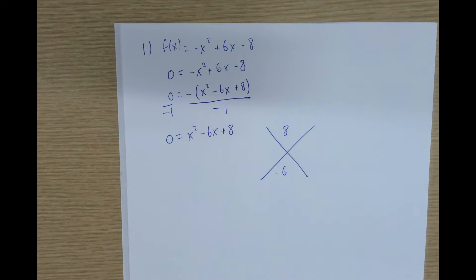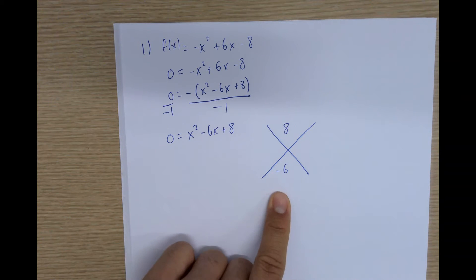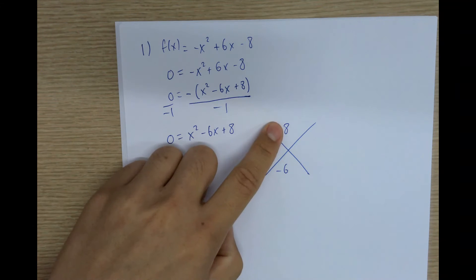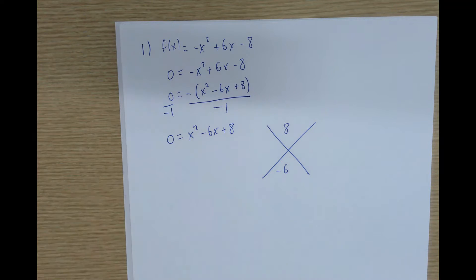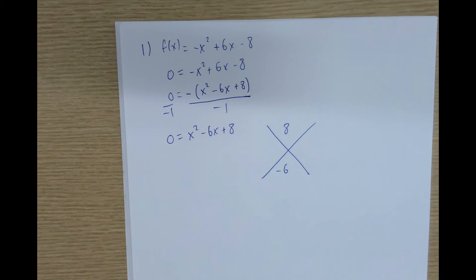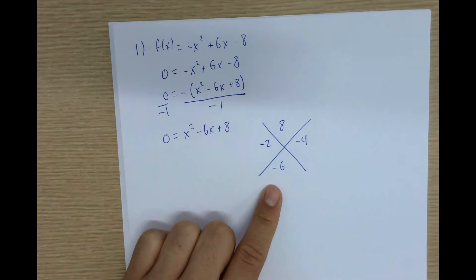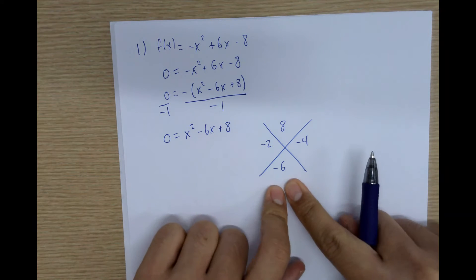Just by looking at the diamond: because the bottom is negative, one or both numbers are negative; because the top is positive, both are negative. The factors of 8 are 1 and 8, or 2 and 4. 1 and 8 can't equal negative 6 even if both are negative. 2 and 4 could equal 6 if both positive, but since we need negative 6, we use negative 2 and negative 4 — they add to negative 6 and multiply to positive 8.